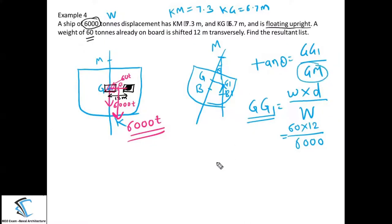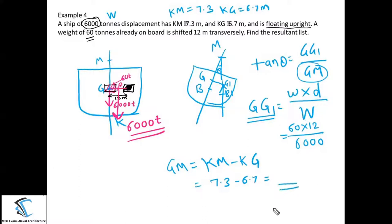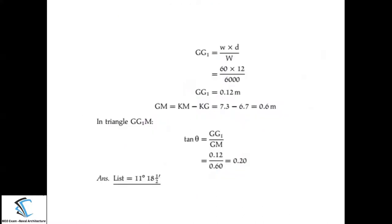We now have GG1 and GM values. GG1 = 0.12 and GM = 0.6. Substituting into the formula gives tan θ = 0.2. Therefore theta = 11 degrees 18.5 minutes. This is the angle of list. In this numerical, the cargo was already on board and shifted transversely, and only one cargo was shifted.